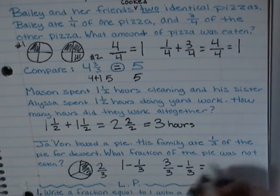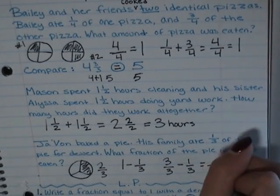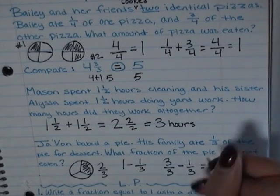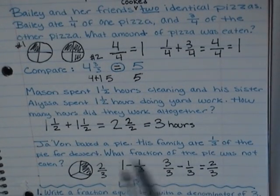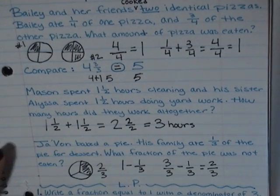So I am going to take three thirds minus one third. When I do that, I remember the denominators stay the same. Three minus one is two. So again, we can check our answers. We both get two thirds.